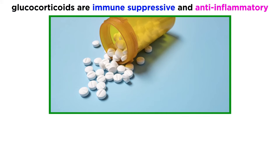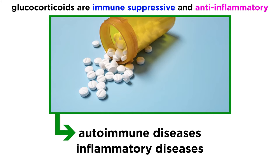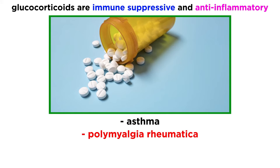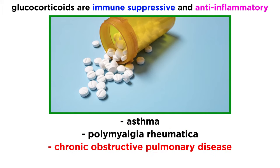Glucocorticoids' primary functions are to be immune-suppressive and anti-inflammatory. With this in mind, it is quite straightforward to understand they have therapeutic efficacy in most autoimmune and inflammatory diseases. The most common conditions that glucocorticoids treat include asthma, polymyalgia rheumatica, chronic obstructive pulmonary disease, and rheumatoid arthritis.